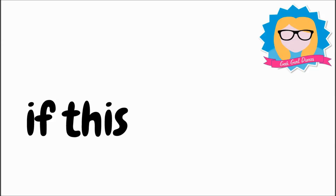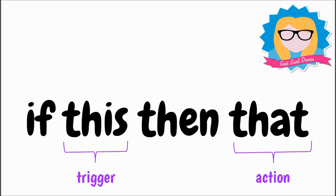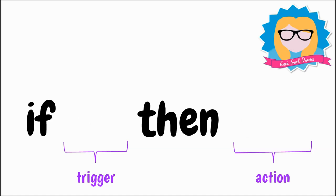If this then that — this is a really basic statement that's used quite a lot when thinking like a computer. If you want to think like a computer then you have to think logically, and an if statement is a really simple way of doing that. If this then that: if something happens, then something else will happen. The 'this' part of the statement is a trigger, and the 'that' part of the statement is an action.